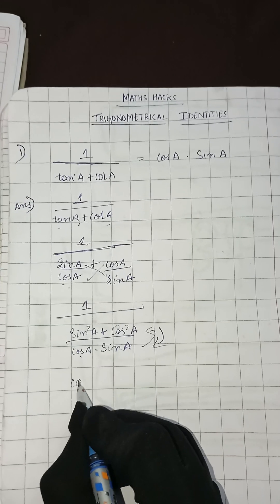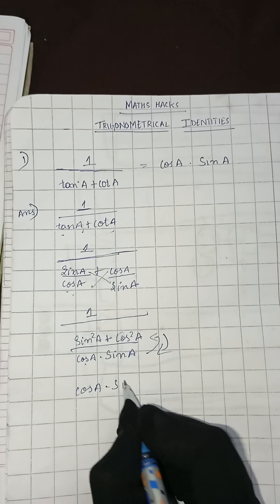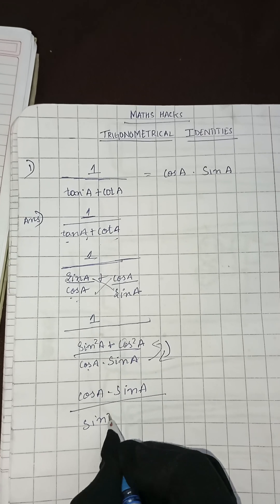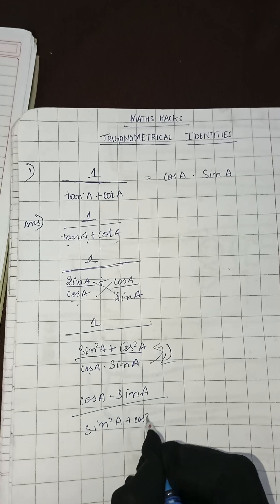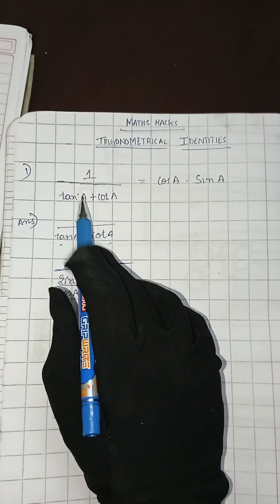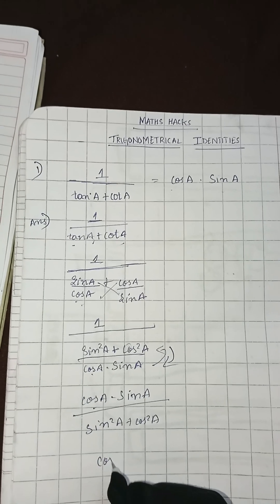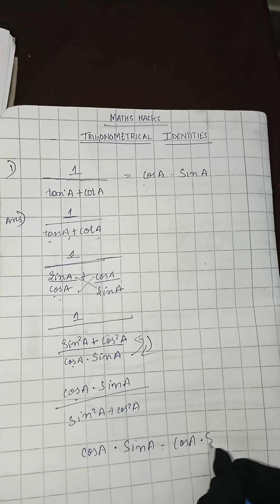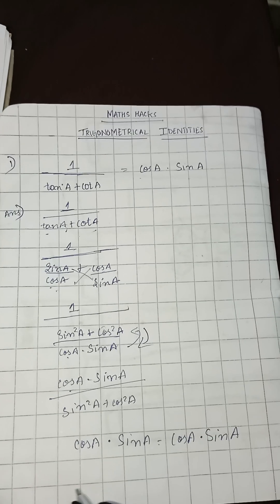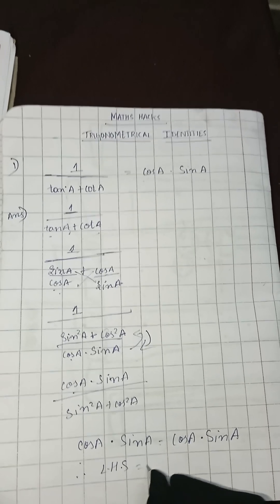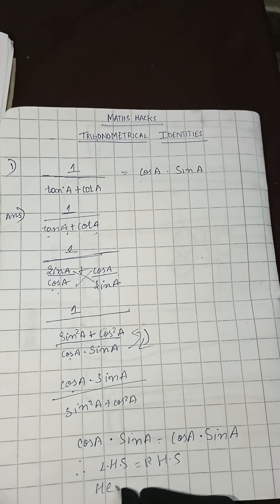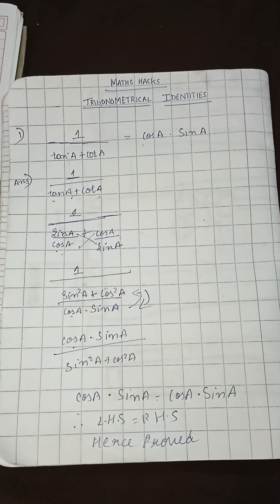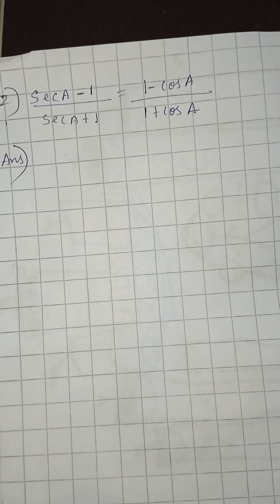To remove the outer 1 we take the reciprocal, so the denominator goes up and the numerator comes down. This gives us cos A times sine A in the numerator, and sine squared A plus cos squared A in the denominator. Since sine squared A plus cos squared A equals 1, we get cos A times sine A, which equals the RHS. Therefore LHS equals RHS, hence proved.